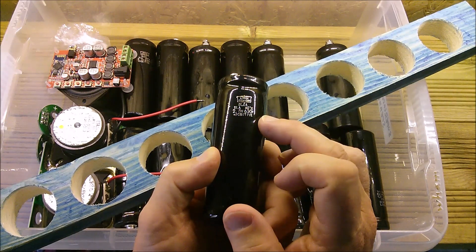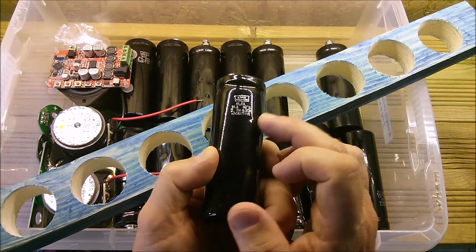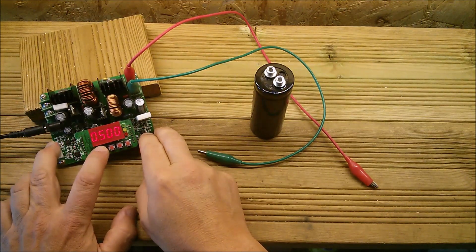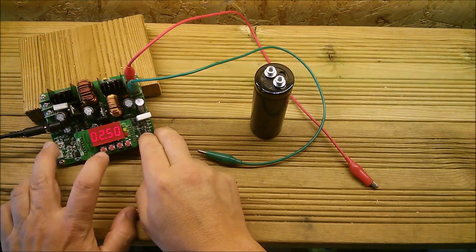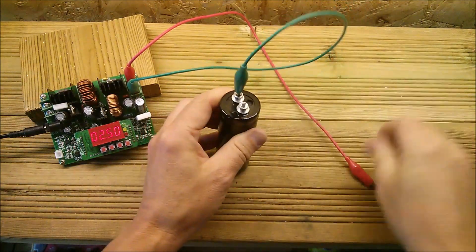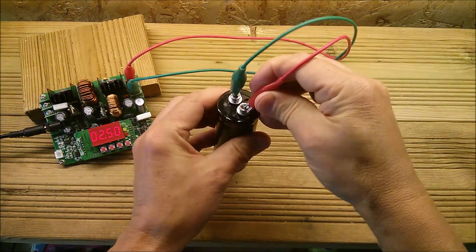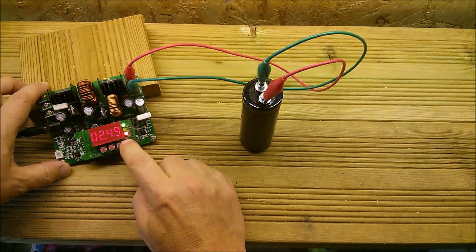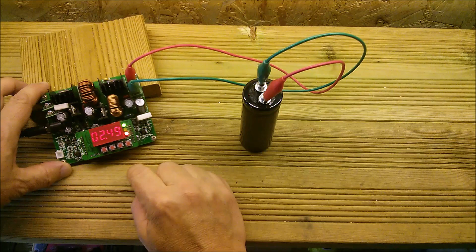This thing's set to 2.5 volts, half an amp. Let's connect negative up to negative on the super cap, positive up to positive, switch on. We should be seeing a very low voltage as this thing gradually comes up as it's being charged, but we're not.